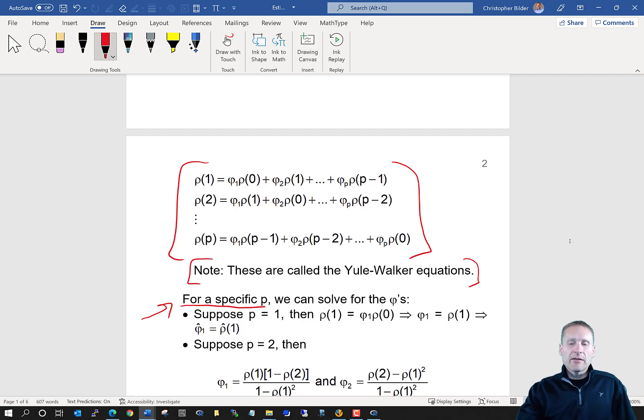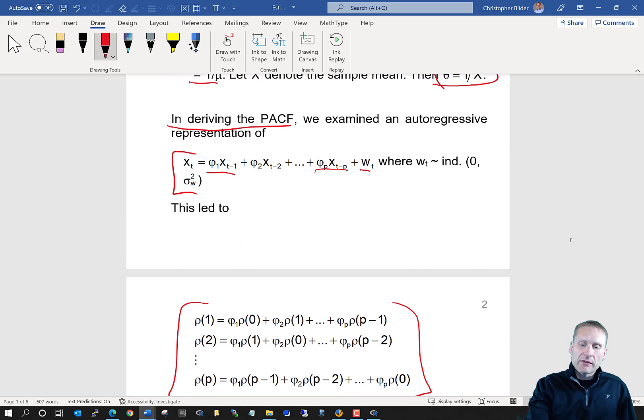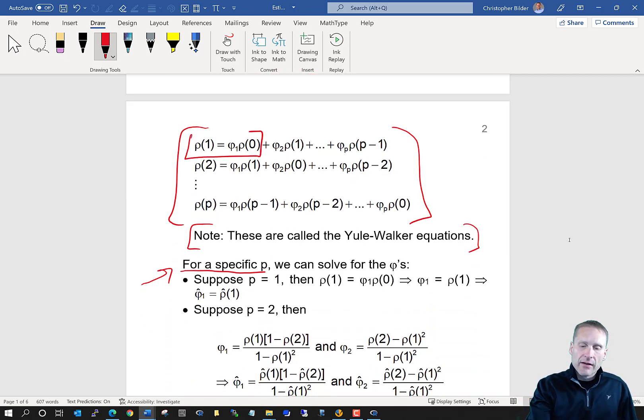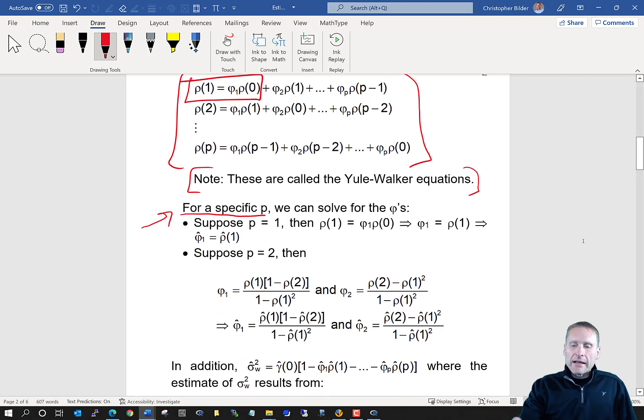And what this ended up leading to is a system of equations where we have the autocorrelations on the left side, and on the right side we had some linear combination of the phis with these autocorrelations. Note that these particular equations have a special name: they're actually called the Yule-Walker equations. Then what we saw when we did the PACF, we said, well, let's take a look at a specific p. Let's suppose that p is equal to one. Then we would only have ρ(1) = φ₁ρ(0). So if we now solve for phi one, then phi one is equal to rho one.